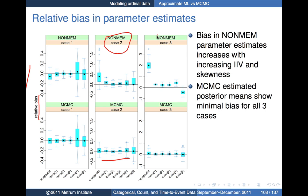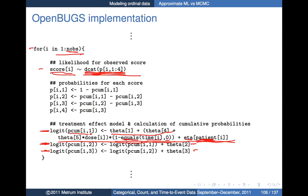For case three — where we have both skewness and large inter-individual variability — we see fairly significant instances of bias with NONMEM, particularly for the standard deviation of inter-individual variation.